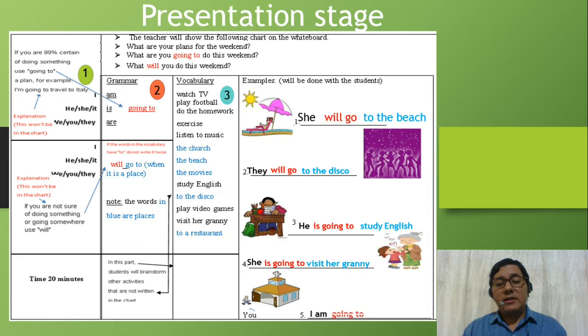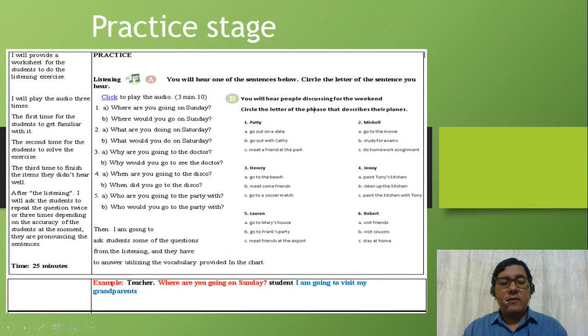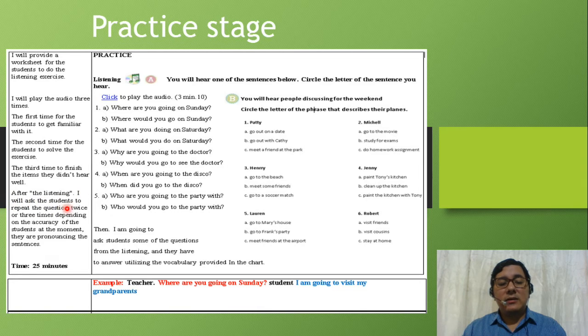In the practice stage, I will provide this worksheet for the students to do the listening exercise. I will play the audio three times: the first time for the students to get familiar with it, the second time for the students to solve the exercise, the third time to finish the items they didn't hear well. After the listening, I will ask the students to repeat the question two or three times depending on the accuracy of the students at the moment they are pronouncing the sentences.